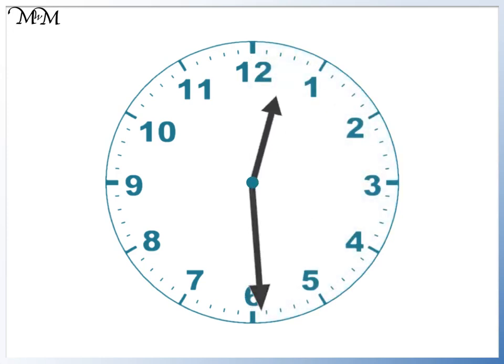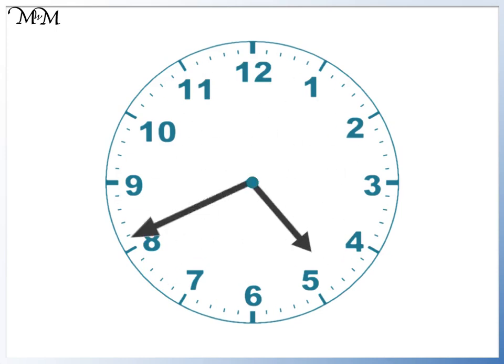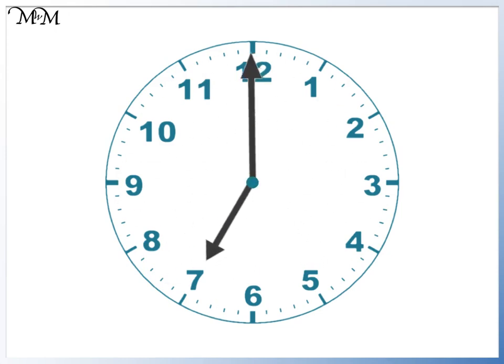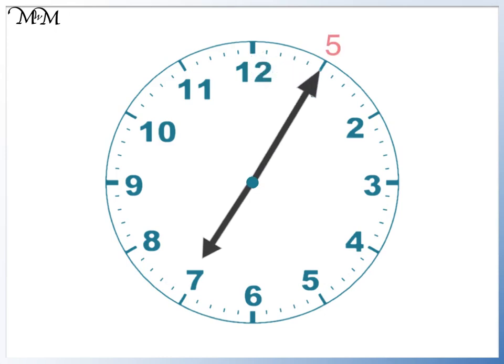We'll look at an example starting at 7 o'clock. The minute hand then moves round to the 1. Remember, this is 5 minutes, so we say that it is 5 past. The hour hand has moved just past 7, so the time is 5 past 7.